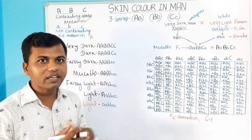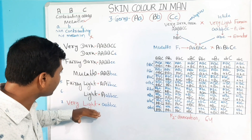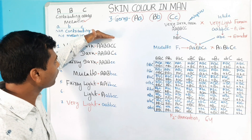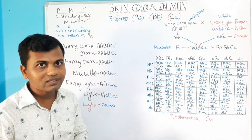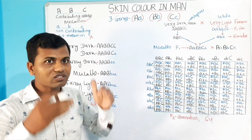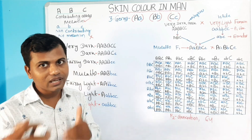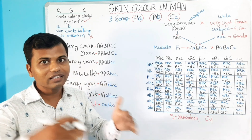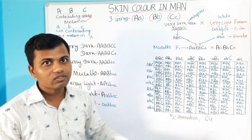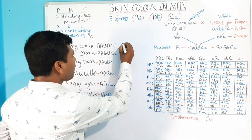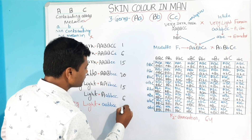From the above 7 phenotypes, it is clearly seen that when the number of contributing alleles increases, the strength of the character increases; when the number of contributing alleles decreases, the strength of the character decreases. Here, in polygenes or in Polygenic Inheritance, the alleles or genes have an additive or cumulative effect. There is no dominance, recessiveness, or epistasis involved. The 7 types of phenotypes obtained in F2 generation appear in the ratio 1 : 6 : 15 : 20 : 15 : 6 : 1.